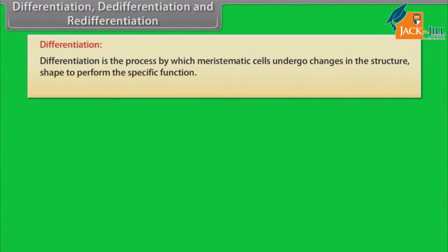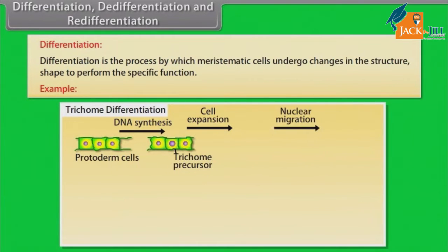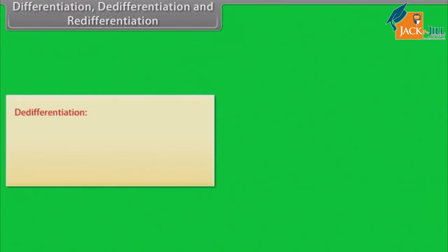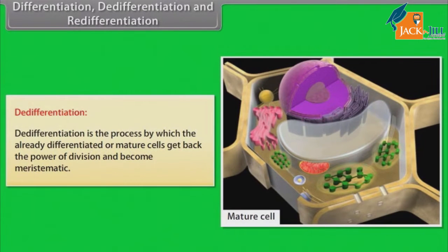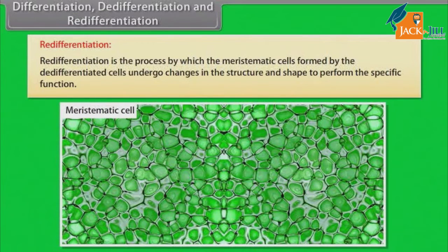Differentiation is the process by which meristematic cells undergo changes in structure and shape to perform specific functions. De-differentiation is the process by which already differentiated or mature cells regain the power of division and become meristematic. Re-differentiation is the process by which the meristematic cells formed by de-differentiated cells again undergo changes in structure and shape to perform specific functions.